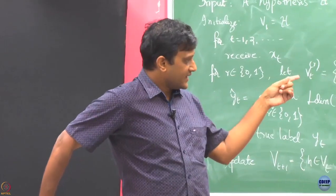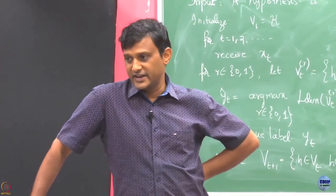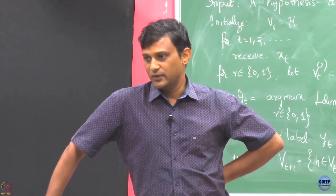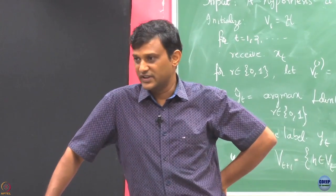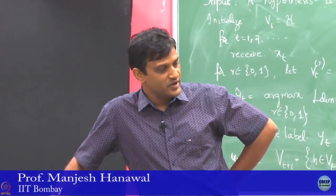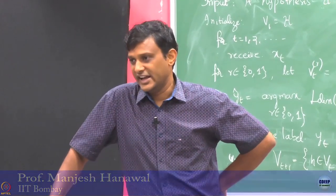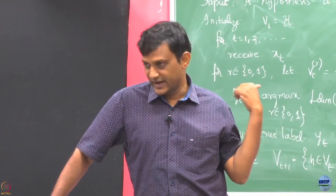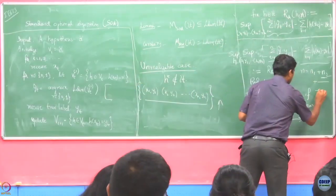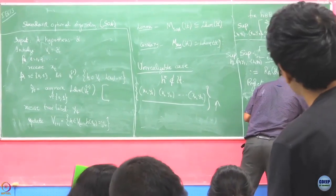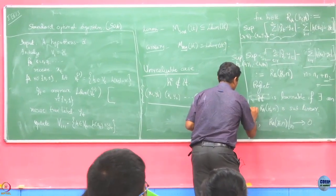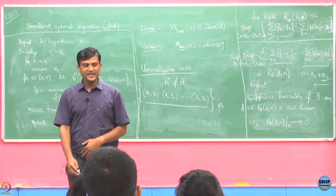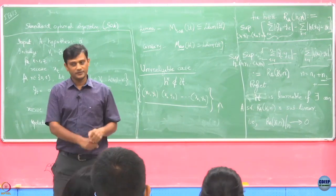You will see different notions of regret as we go along this course. Our next step is to see what kind of bounds we can give on this, what kind of guarantees we can provide, and always we will ask: is this the best guarantee I can give? — just like we did for the realizable case. Note that if I can come up with an algorithm A such that this condition holds, then H is learnable.